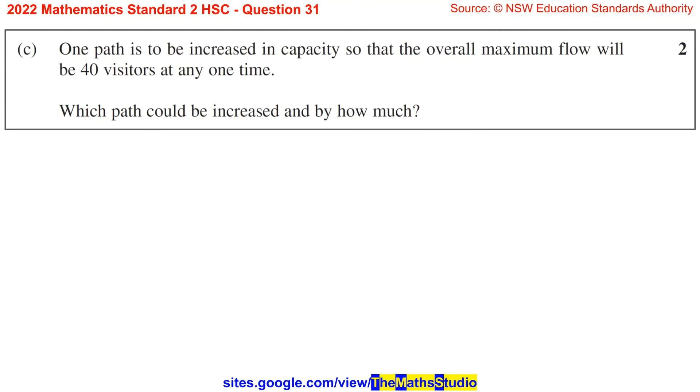Part C. One path is to be increased in capacity so that the overall maximum flow will be 40 visitors at any one time. Which path could be increased and by how much?